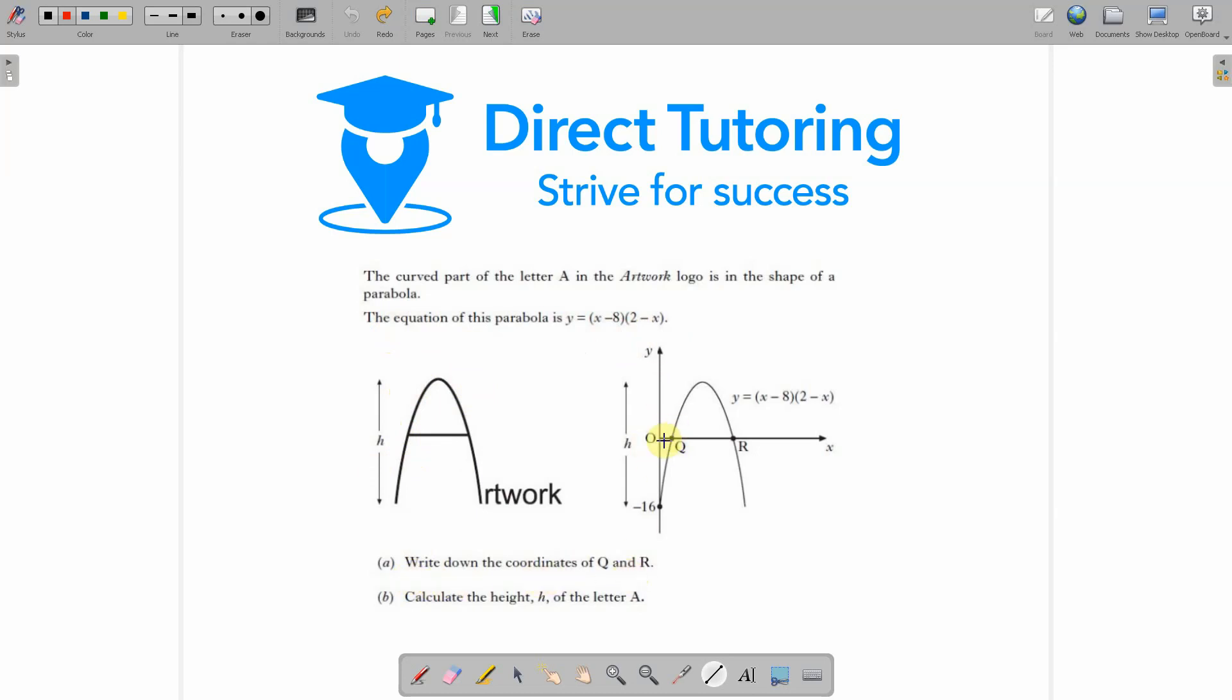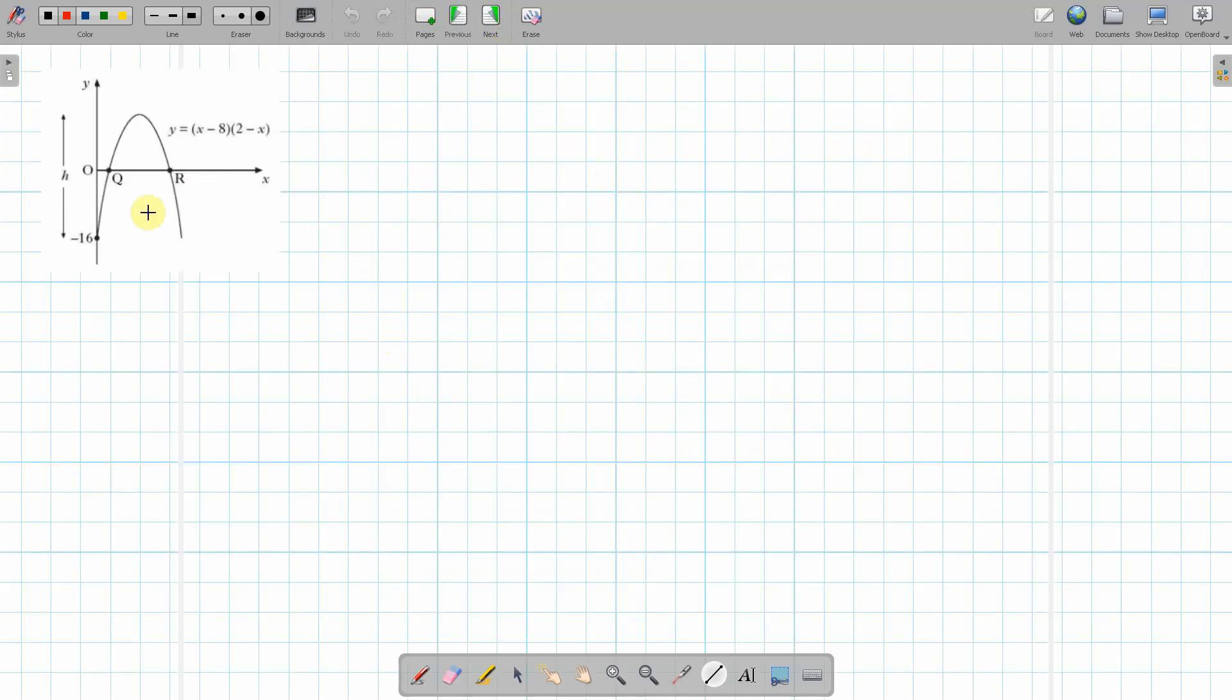So Q and R are the roots of the equation. So we've got the equation here, so if we write this one down we have y equals (x minus 8)(2 minus x).